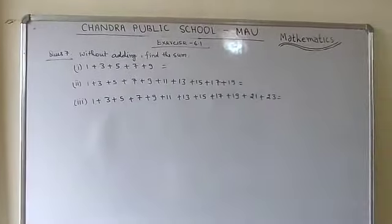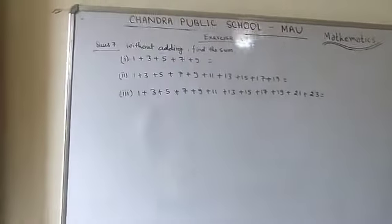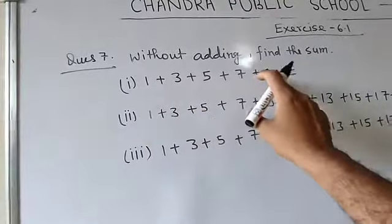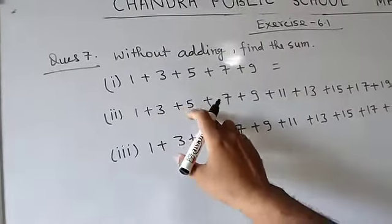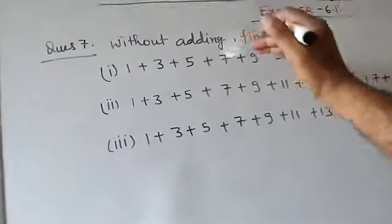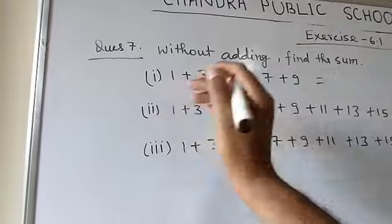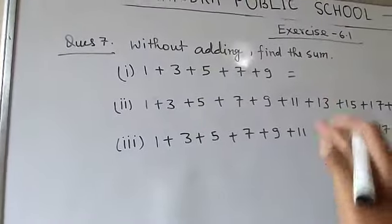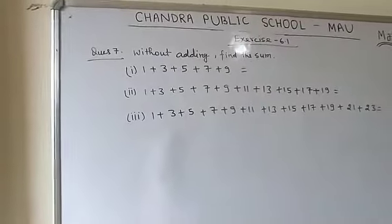Now here is question number 7: without adding, find the sum. The first part is 1+3+5+7+9, and the second is 1+3+5+7 up to 19. You need to find the sum without directly adding the numbers.